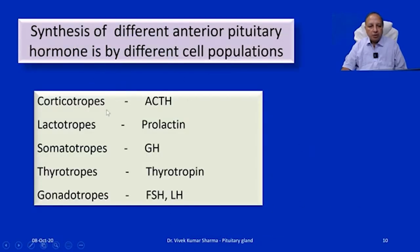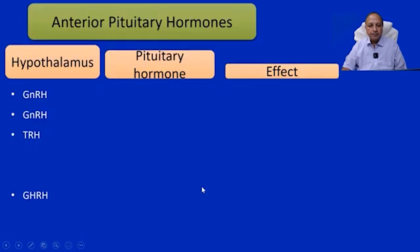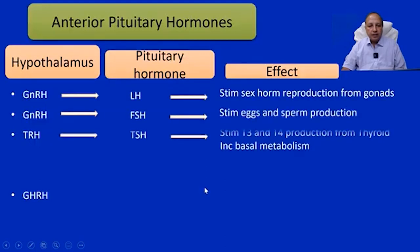The corticotrophs give rise to adrenocorticotropic hormone (ACTH). The lactotrophs cause the release of prolactin. The somatotrophs cause the release of growth hormone. The thyrotrophs cause the release of thyrotropin. The gonadotrophs cause the release of follicle stimulating hormone and luteinizing hormone. The hypothalamus causes the release of these hormones.